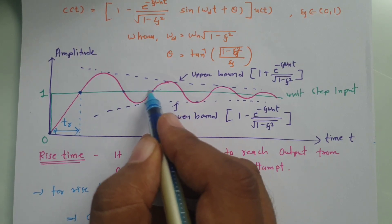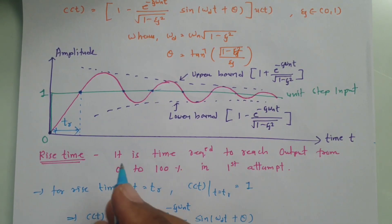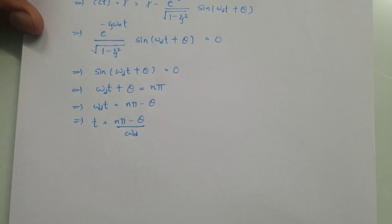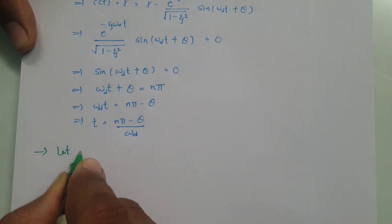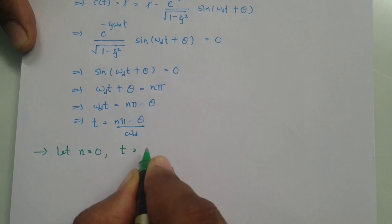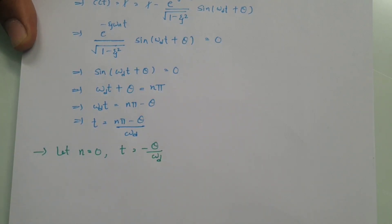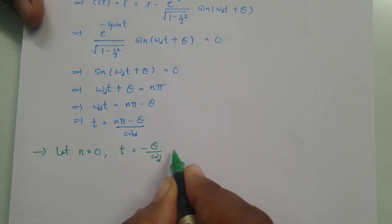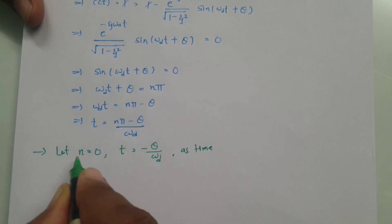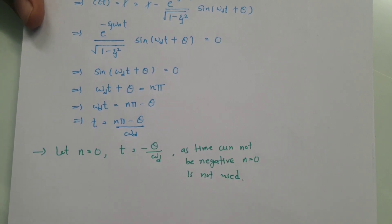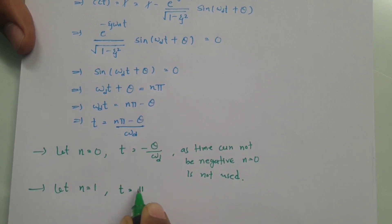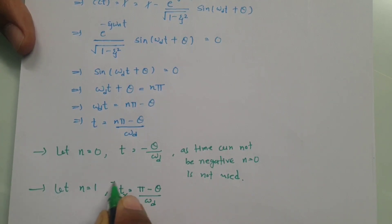The output reaches 100 percent multiple times — at several points on the graph. We test values of n. For n = 0: t = −θ / ω_d, which is negative, and since time cannot be negative, n = 0 is rejected. For n = 1: t = (π − θ) / ω_d, which is positive and valid. This is the minimum time to reach 100 percent, so this is the rise time.